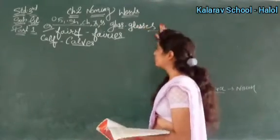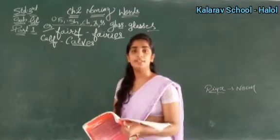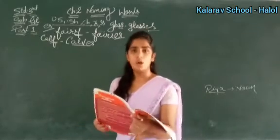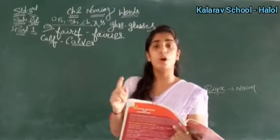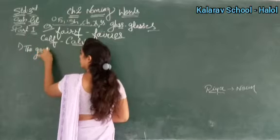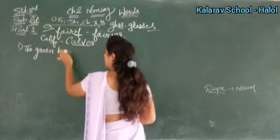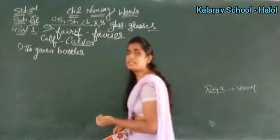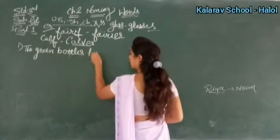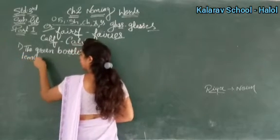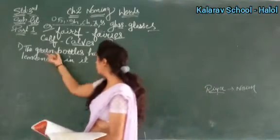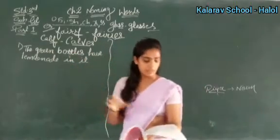Agar yeh rules yaad rakhoge, then you will find it easy to write the sentences. Now see the first sentence: 'The green bottle has lemonade in it.' Bottle underlined hai. So plural karenge: the green bottles have lemonade in it. Bottle mein S lagayenge — bottles ho jayega, aur 'has' ki jagah 'have' aayega.